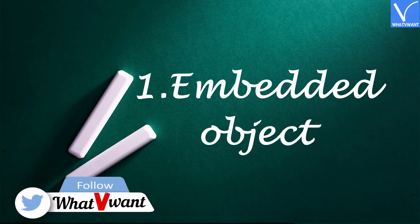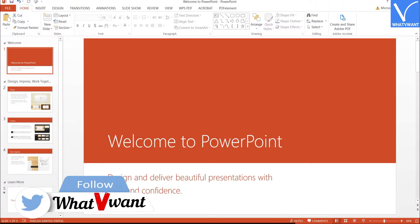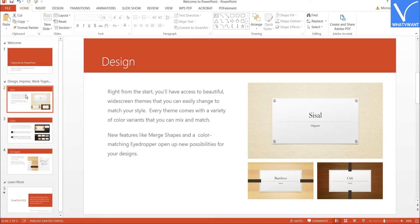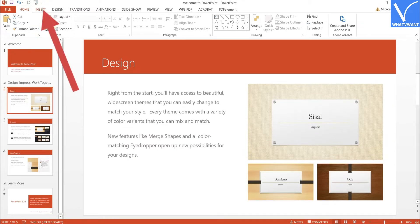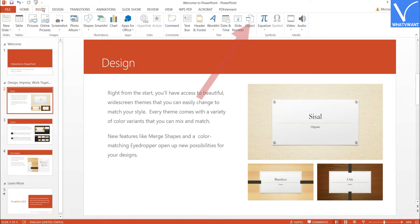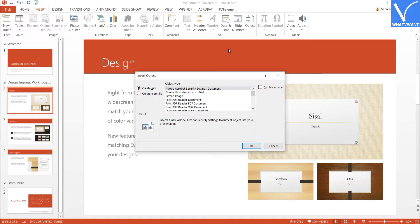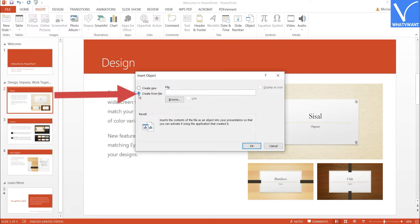Number 1: Embedded Object. Open the PowerPoint file using Microsoft PowerPoint application. Choose the slide where you want to insert the PDF file. Click on the Insert tool and select the Object option. The Insert Object window will appear on the screen. Click on Create from File.